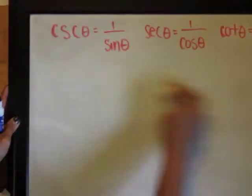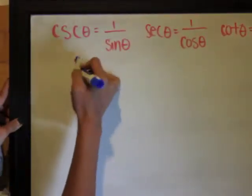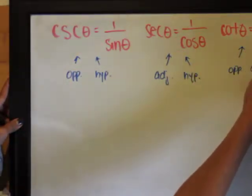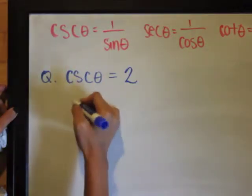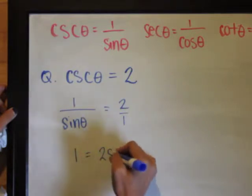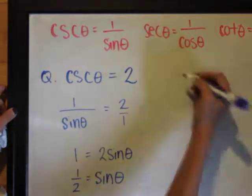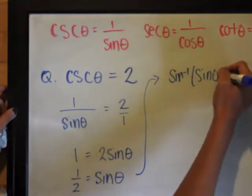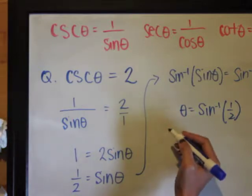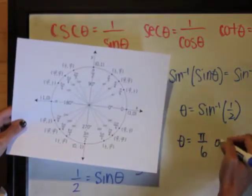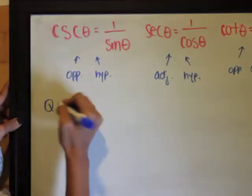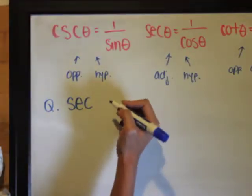Just a reminder from last week: cosecant is 1 over sine, secant is 1 over cosine, and cotangent is 1 over tangent. Let's move on to cosecant, secant, and cotangent. For a question like csc θ = 2, the first thing I'll do is replace that with 1/sin θ, so I get sin θ = 1/2. Using a calculator or unit circle, I know the opposite length is 1/2 when the angle is π/6 or 30°.